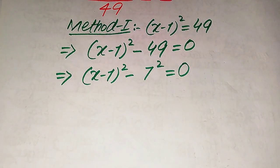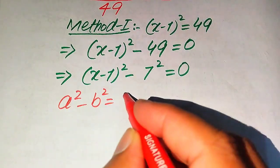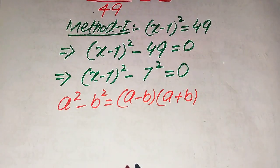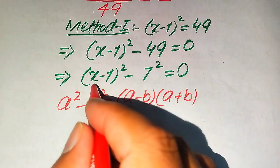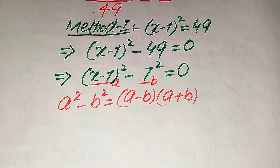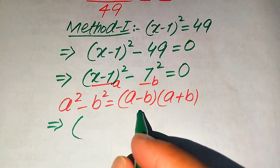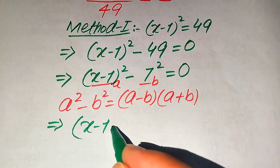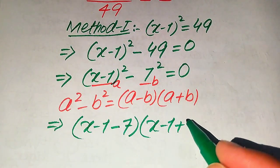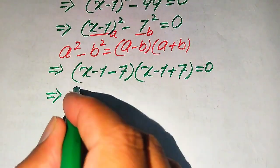In the next step we use the algebraic formula: a squared minus b squared equals (a minus b) times (a plus b). Here the base of the first term is our 'a' and the base of the second term is our 'b'. So according to these two values of a and b, we apply the formula — the value of a is (x minus 1) and the value of b is 7.